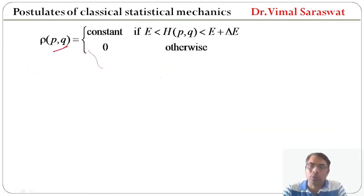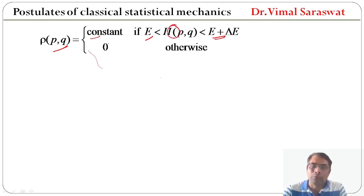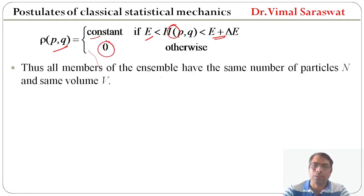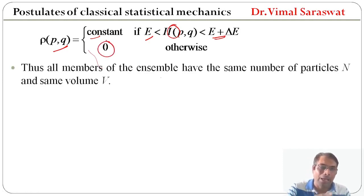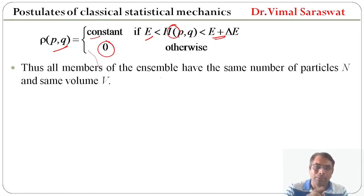The density function rho is constant if the Hamiltonian lies between energy E and E plus delta E, and outside this range rho will be zero. Thus all members of the ensemble have the same number of particles N and the same volume V.